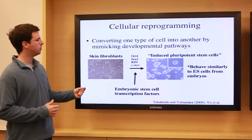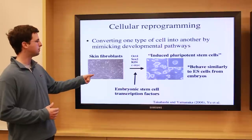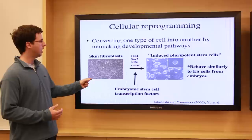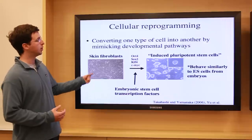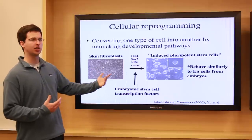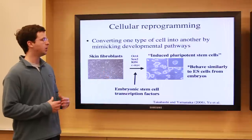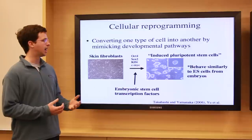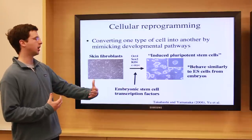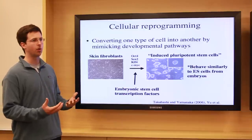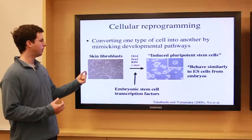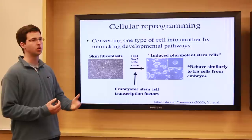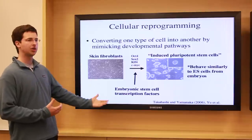This would allow you to take a skin biopsy from a patient, which is very straightforward, culture those cells, then reprogram them to an embryonic stem cell-like state, giving you basically patient-specific embryonic stem cells. You can then coax those cells to differentiate into neurons, and you would have neurons that have the specific genetic mutation you're interested in, if you start from a patient who you know has that mutation.